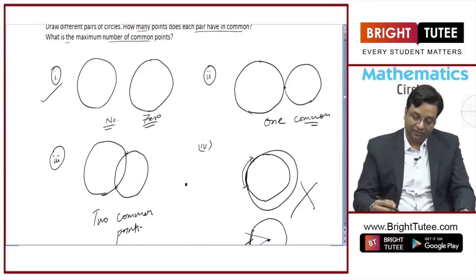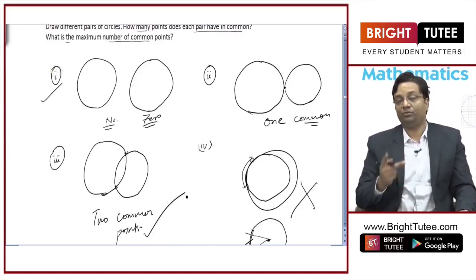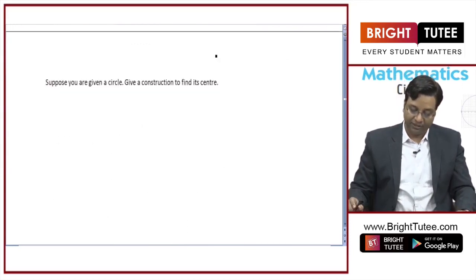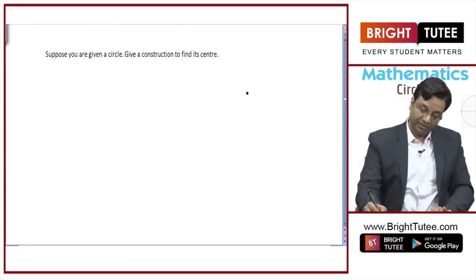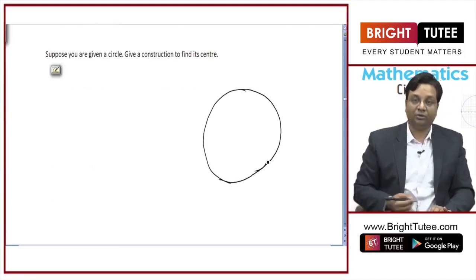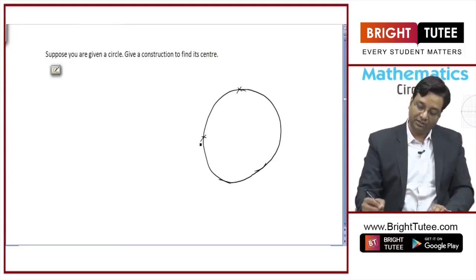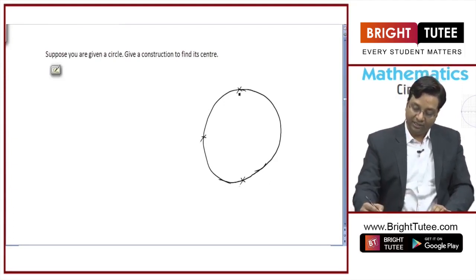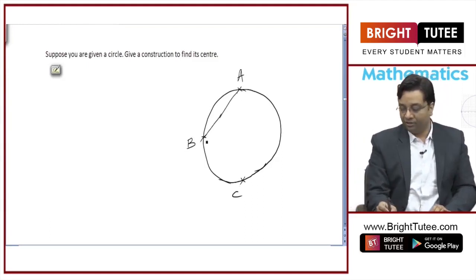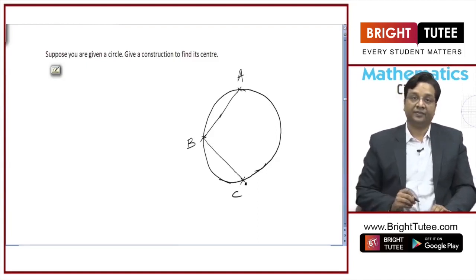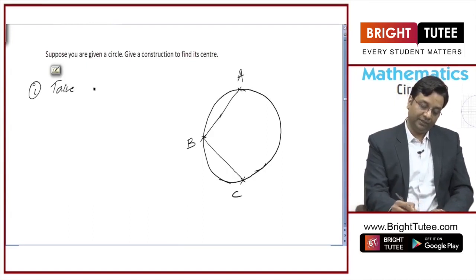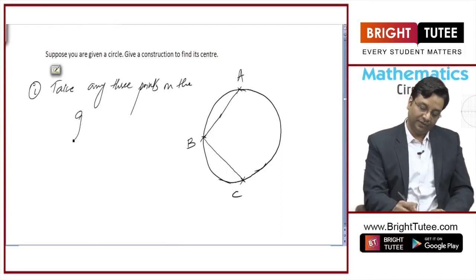So two different circles can have a maximum of two common points or two points of intersection. Now, suppose you are given a circle — find a construction to find its center. If you have a circle and are looking for its center geometrically, take any three points on the circle. Let us say points A, B, and C are taken on the circle.